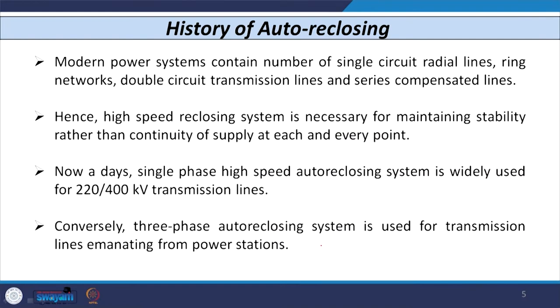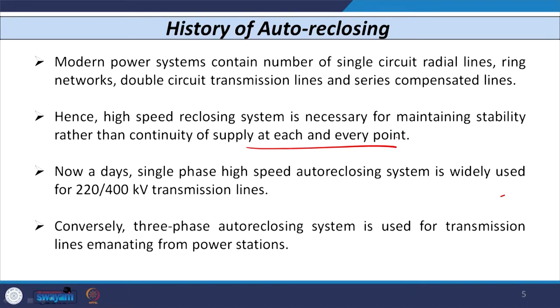Modern power systems contain radial lines, ring networks, and double circuit and series compensated lines. High speed reclosing is necessary to maintain stability rather than just continuity of supply at each point. Nowadays, high-speed auto reclosers are being utilized particularly for 220 kV and 400 kV EHV and UHV lines, while three-phase auto reclosing is used for transmission lines emanating from substations.